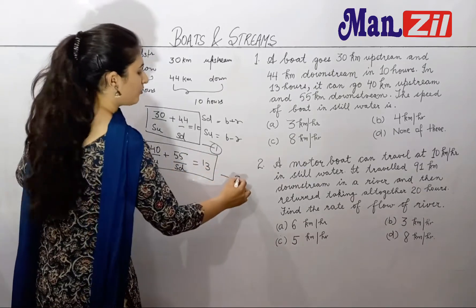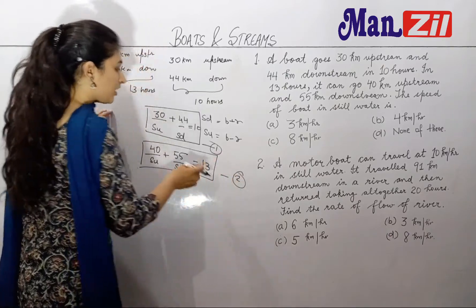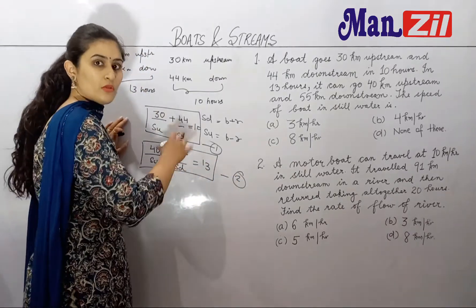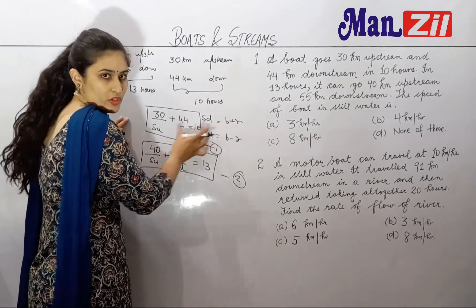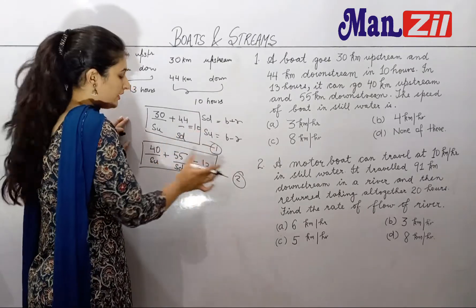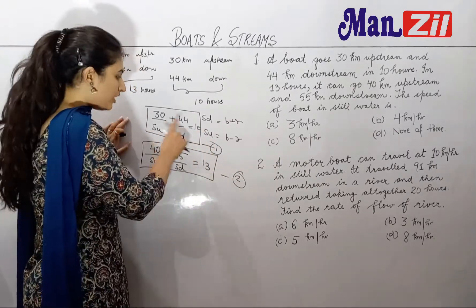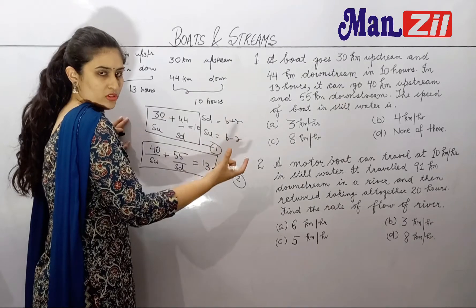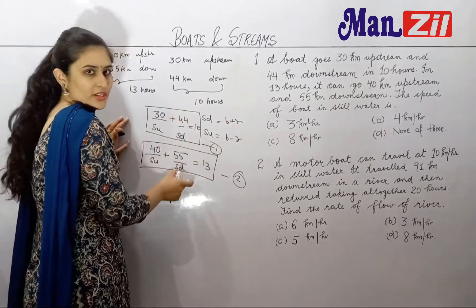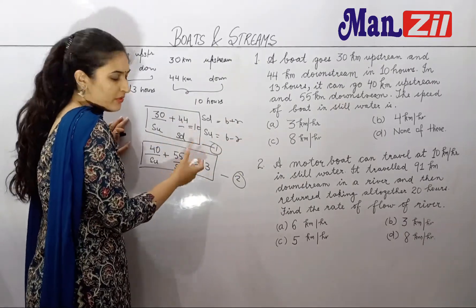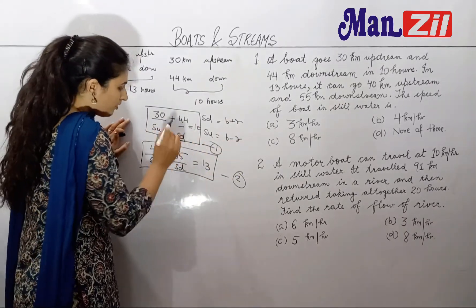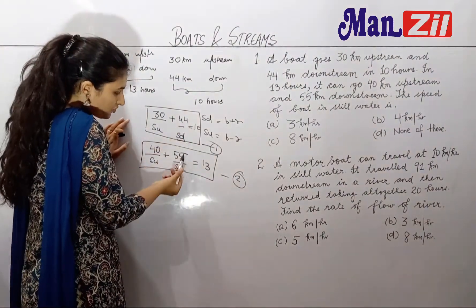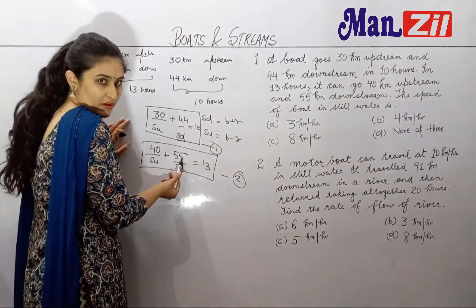If we solve this equation directly, it becomes a very complicated equation. So we need to judge what we need to do. Here we have a speed downstream value, and in the first case the downstream distance is 44, and in the second case it is 55.